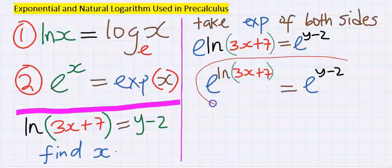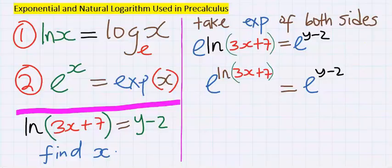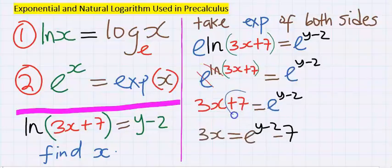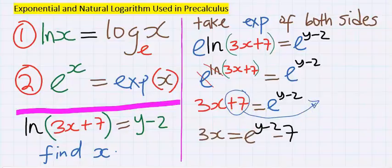Or it can be written as this. Both are the same. Natural log does not like the presence of exponential, hence both will cancel out and 3x plus 7 is now free. Plus 7 will move across to become minus 7.